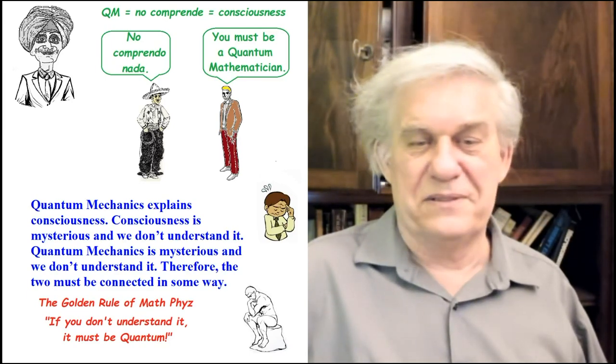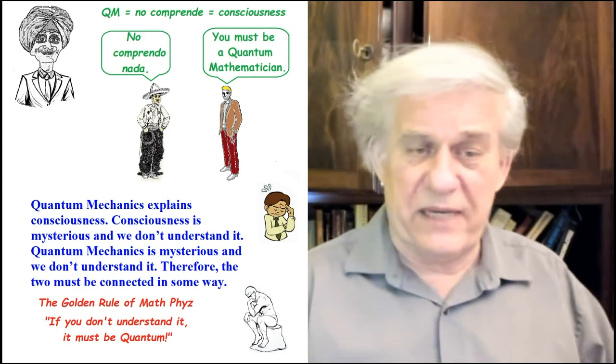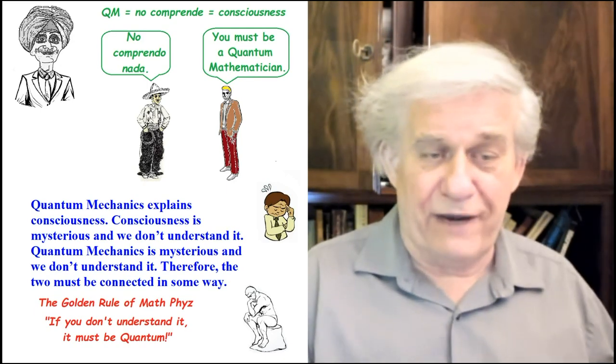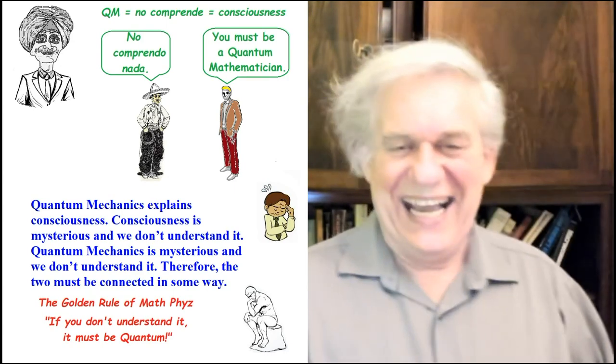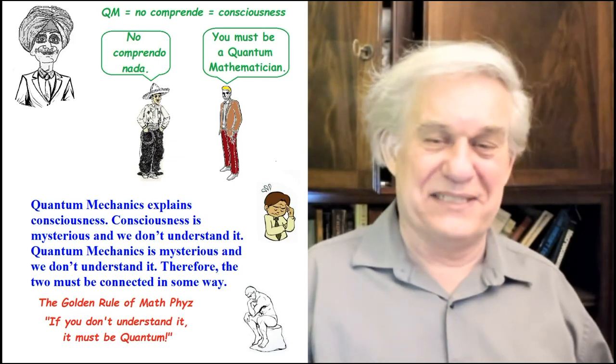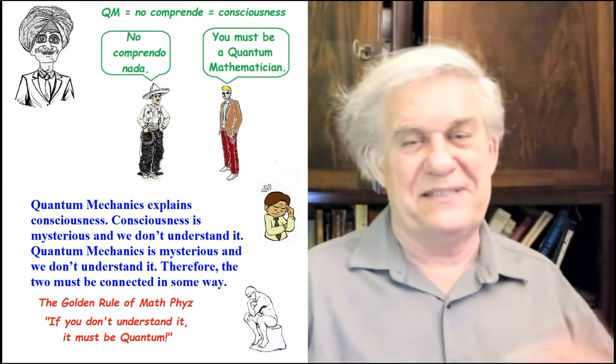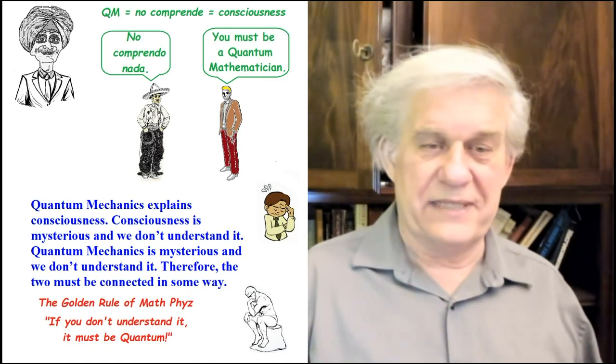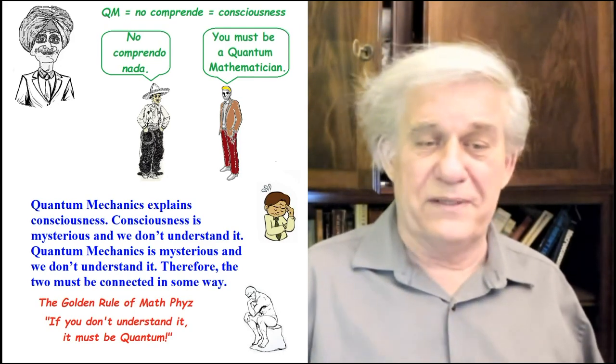Then there's consciousness. Anyone introducing the word consciousness into the discussion — what I call Hare Krishnas. Al-Khalili says quantum mechanics explains consciousness: 'Consciousness is mysterious and we don't understand it. Quantum mechanics is mysterious and we don't understand it. Therefore the two must be connected.' His logic: we don't understand consciousness, we don't understand quantum mechanics, so maybe consciousness is mediated by quantum processes. My golden rule of mathematical physics: if you don't understand it, it must be quantum.